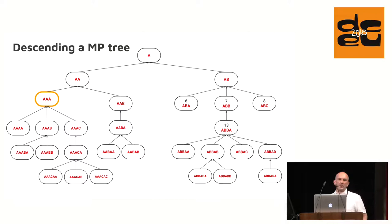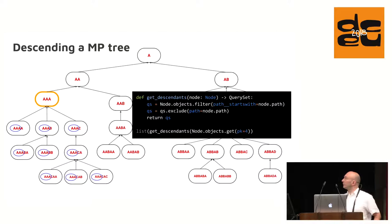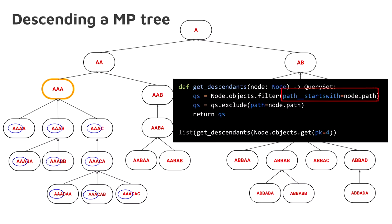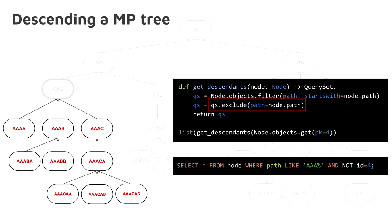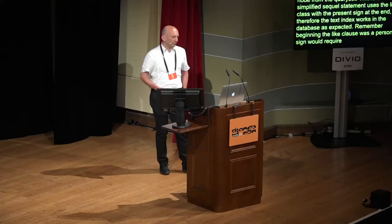So here are examples. We want to find all descendants of the highlighted node. The path field contains the word AAA. So we look for all nodes starting with that pattern. This Python function returns a query set for all descendants. Here we use the starts_with restriction on the query filter. This makes use of the database index on the path field. Therefore we have a fast query to fetch the subtree. We also want to exclude the starting node from the query set. And this is a simplified SQL statement. It uses the like clause with the percent sign at the end. Therefore the text index works in the database as expected. Remember, beginning the like clause with a percent sign would require a full table scan. But so the database index still works.